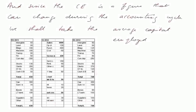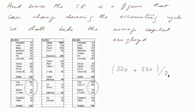And since the capital employed is a figure that can change during the accounting cycle, we shall take the average capital employed. The capital employed at the beginning of the year is 370 plus 50, 420 plus 100, 520. So the capital employed at the beginning of the year were 520 and the capital employed at the end of the year are 300, 400, 450, 550. So we shall sum them up and divide by 2, that is we shall average them. These are the average capital employed over this year.